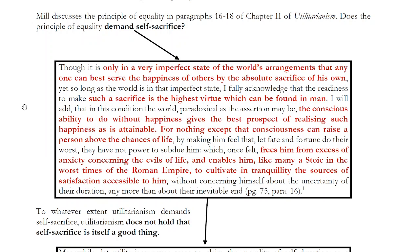To put it in language used previously, we saw that Mill thinks the moral sentiments are a higher pleasure. And in his view, acting in a non-selfish, altruistic way so as to benefit others is a higher pleasure — a sort of higher pleasure that gives human life meaning. And so he tells us: the conscious ability to do without happiness gives the prospect of realizing such happiness as is obtainable.